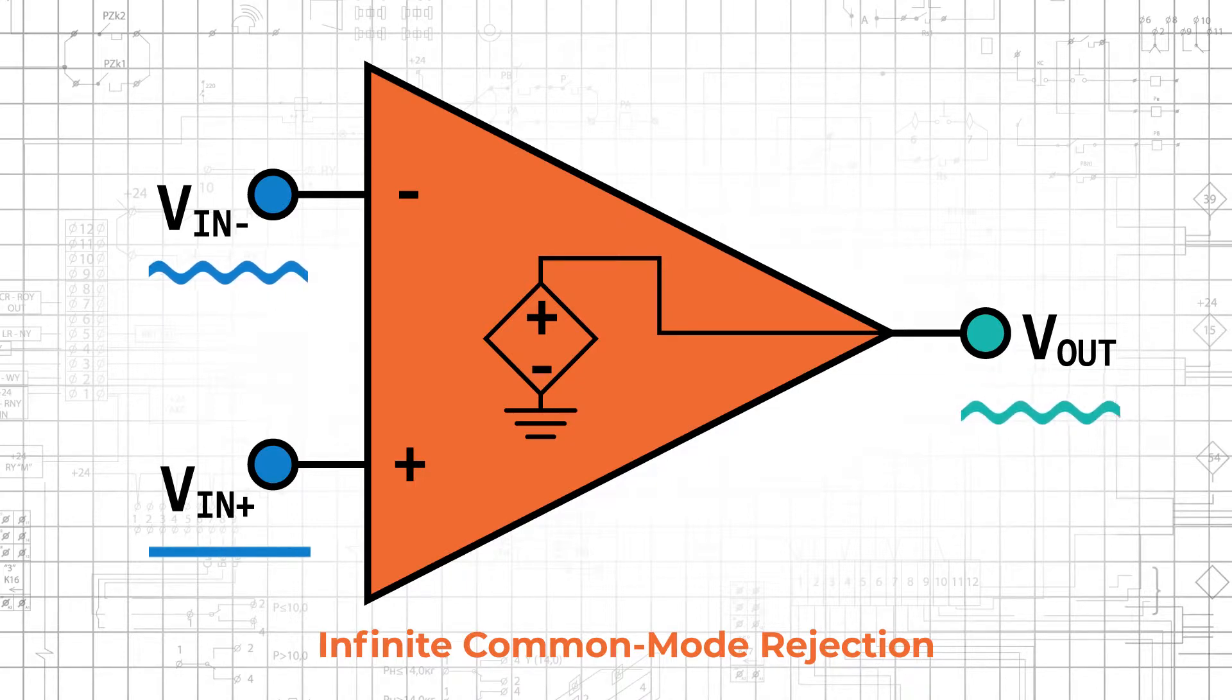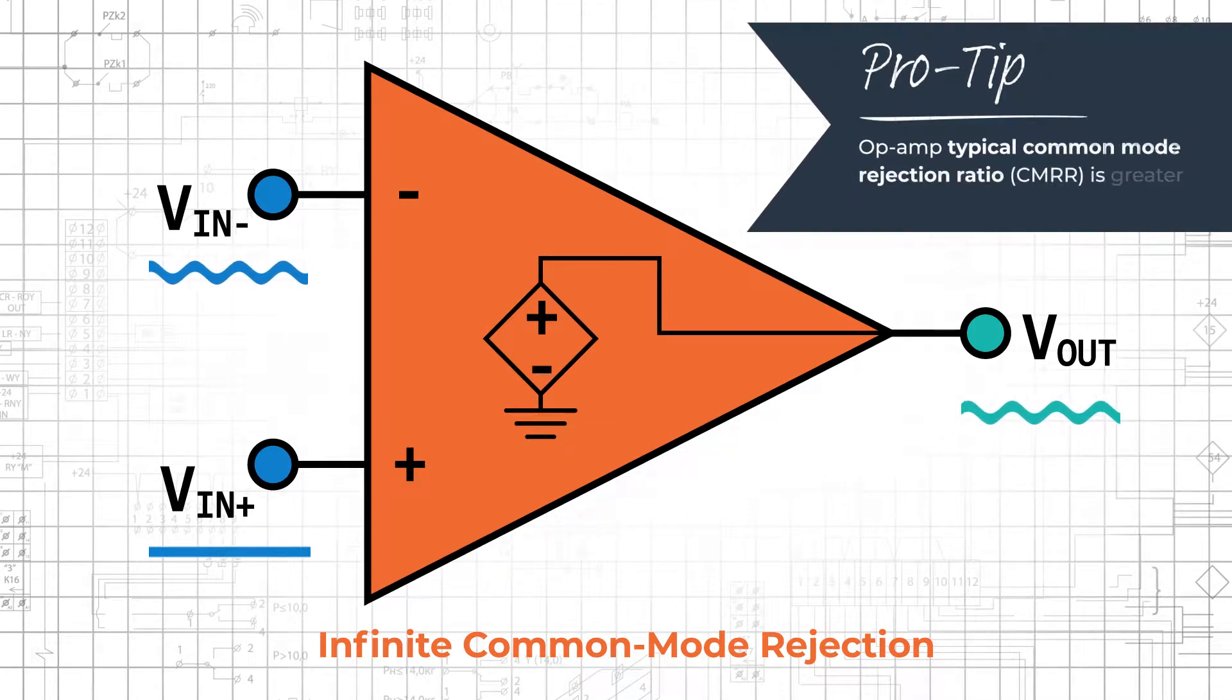Infinite common mode rejection is not realistic because it would require perfect manufacturing. However, real-life op amps offer common mode rejection that is high enough to meet the needs of typical applications.